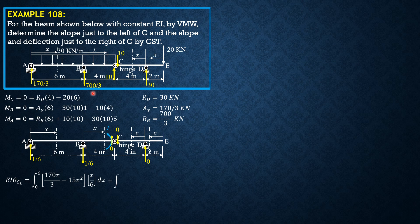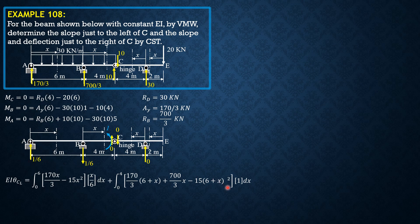In the second section, plus the integral from 0 to 4 of the quantity [170/3·(6+x) plus 700/3·x minus 30·(6+x)·(6+x)/2], which simplifies to minus 15·(6+x)², times the virtual moment. Considering virtual forces, since 1/6 and 1/6 constitute a couple, the virtual moment is 1/6·(6+x) minus 1/6·x, which reduces to 1, or simply 1/6 times 6 equals 1 because it is a couple.